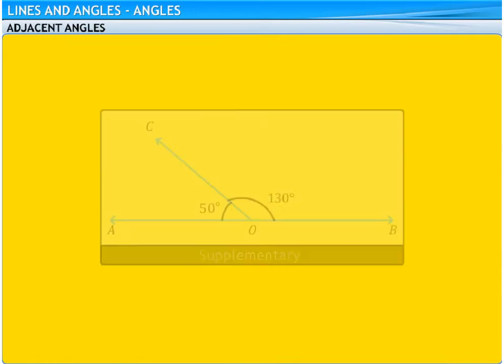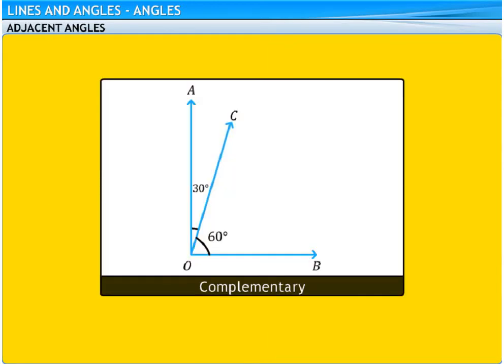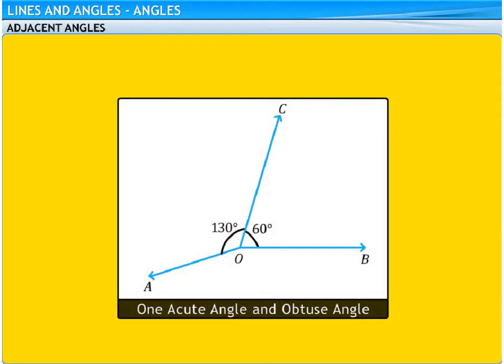Also, two adjacent angles can be either supplementary or complementary. They can also be formed by two obtuse angles. Another combination is having one acute angle and the other an obtuse angle.